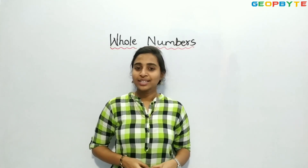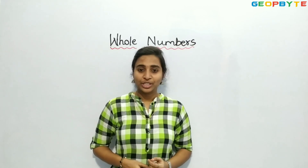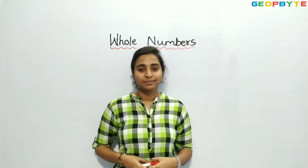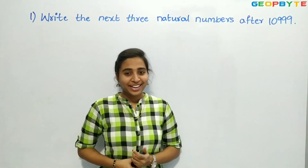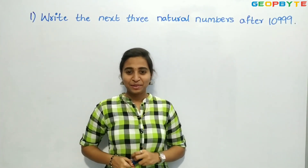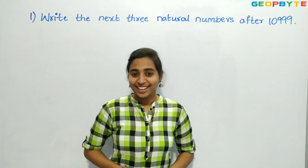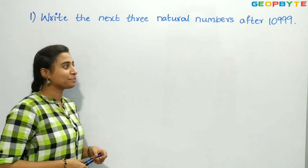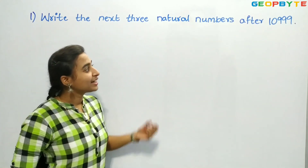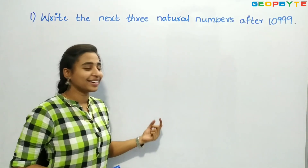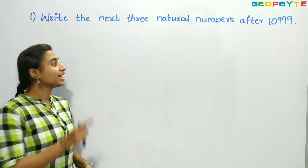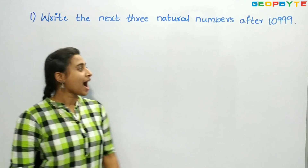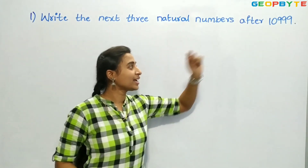In this video, let us cover up to the 5th question in exercise number 2.1. The first question is: write the next 3 natural numbers after 10,999. We need to write the next 3 natural numbers which come after 10,999.